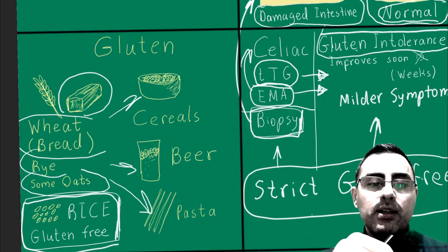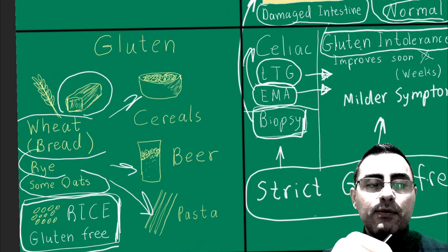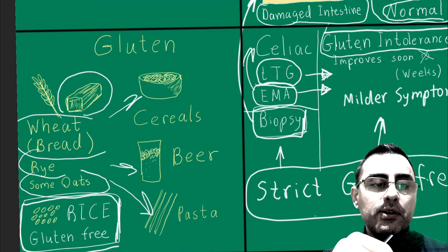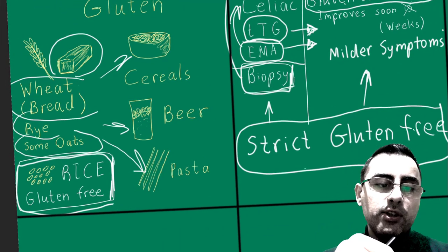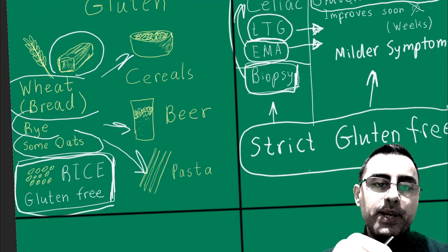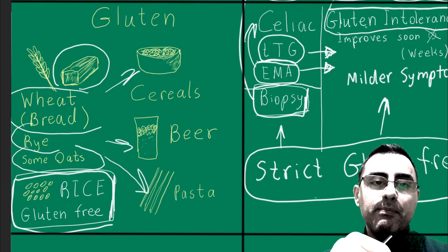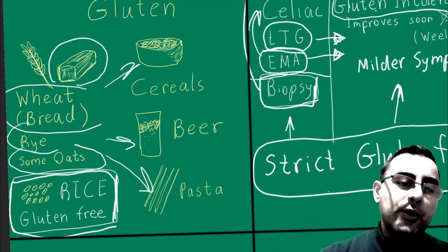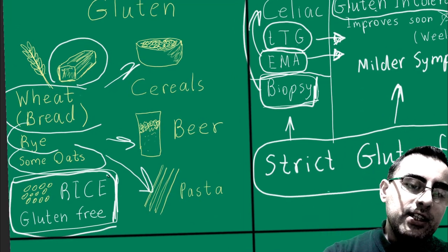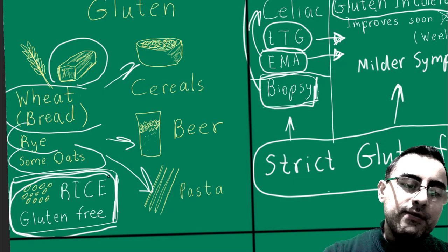Gluten-containing foods include wheat products, some oats, beers, cereals, pasta, and baked goods. Rice is naturally gluten-free.